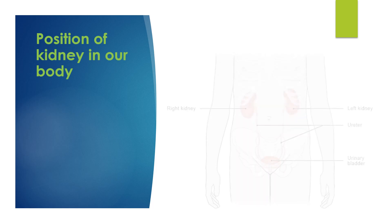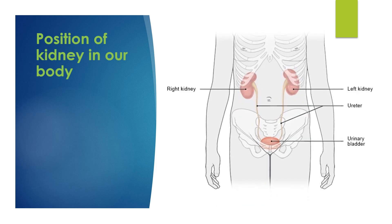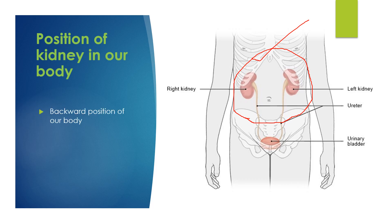Now, what is the position of the kidney in our body? So see here — this is our chest cavity or ribcage, and this portion is actually the backward portion of our body, at the lower abdominal position. So the kidney is present at the backward position of our body, at the left and right side of the vertebral column.